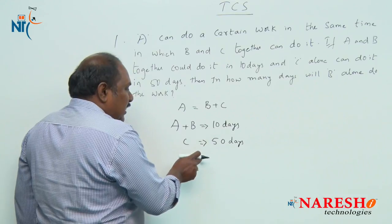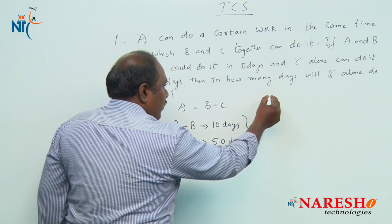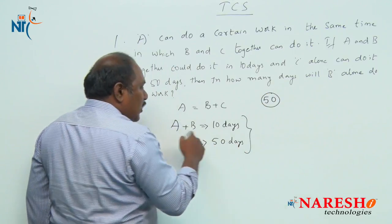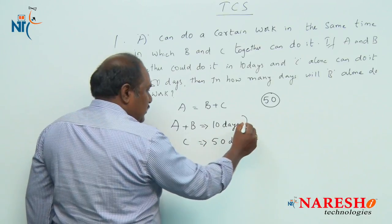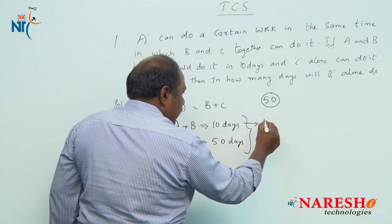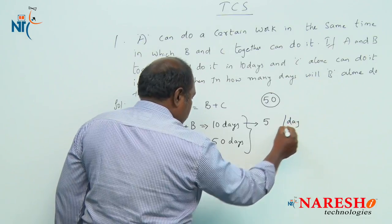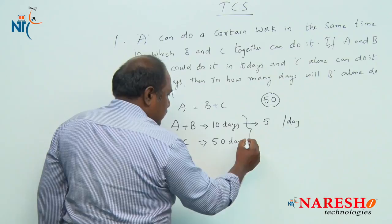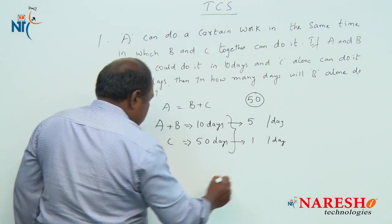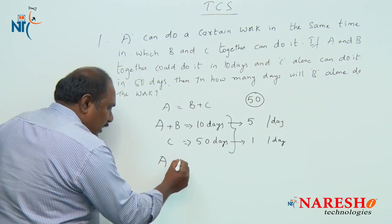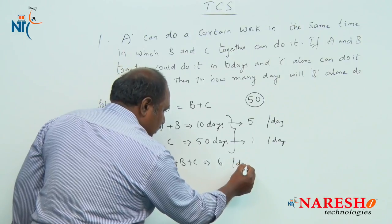The number exactly divisible by both 10 and 50 is 50, so I assume the total work is to eat 50 chocolates. A and B together can complete the work in 10 days, so A and B together eat 5 chocolates per day. C alone completes the work in 50 days, so C eats 1 chocolate per day. Therefore, A, B, and C together eat 6 chocolates per day.